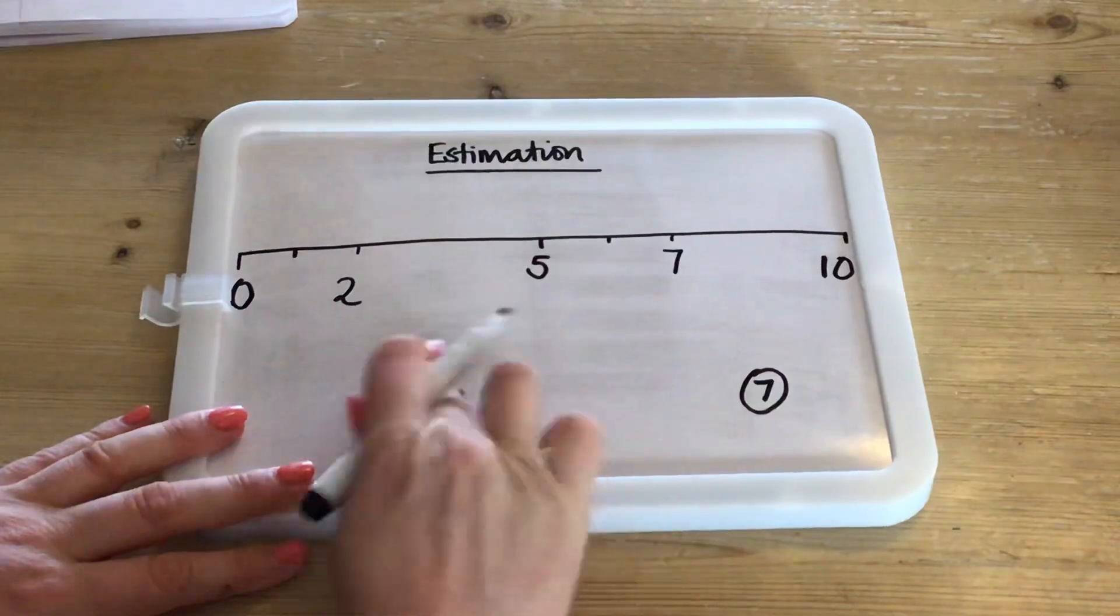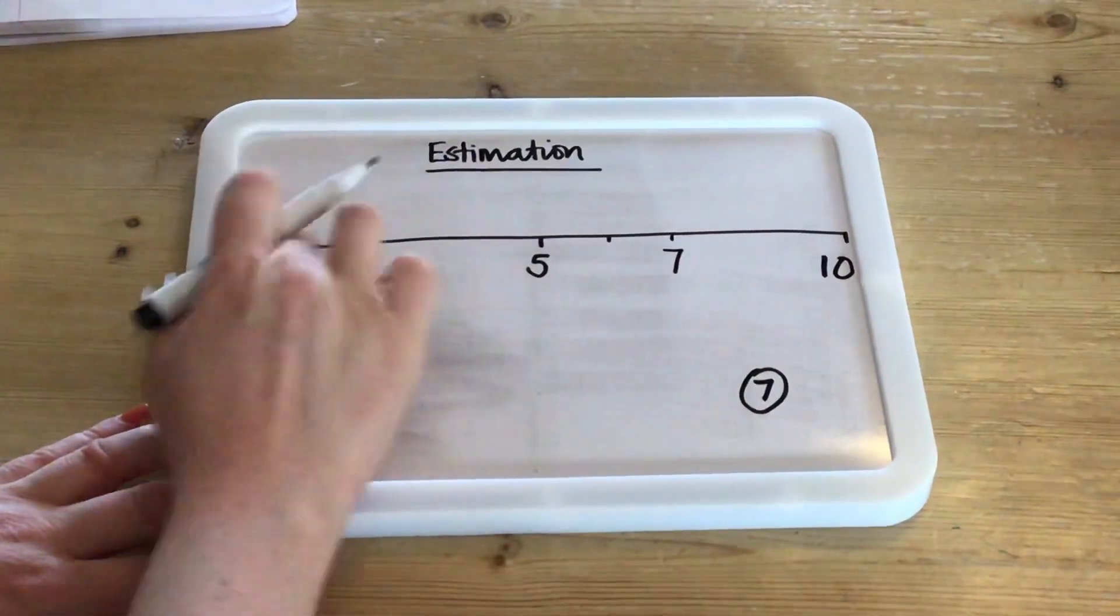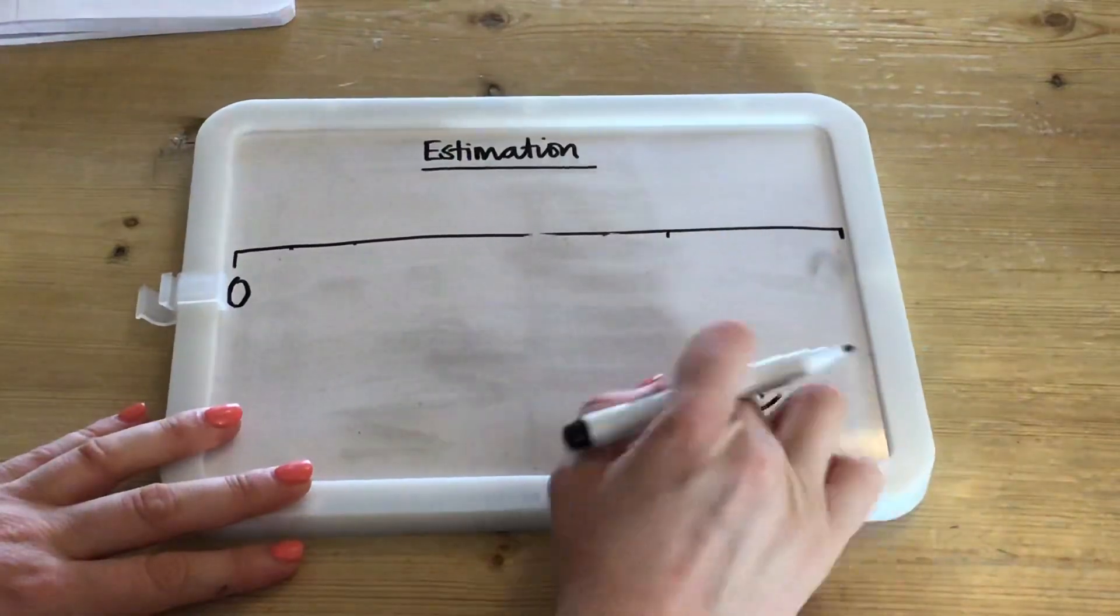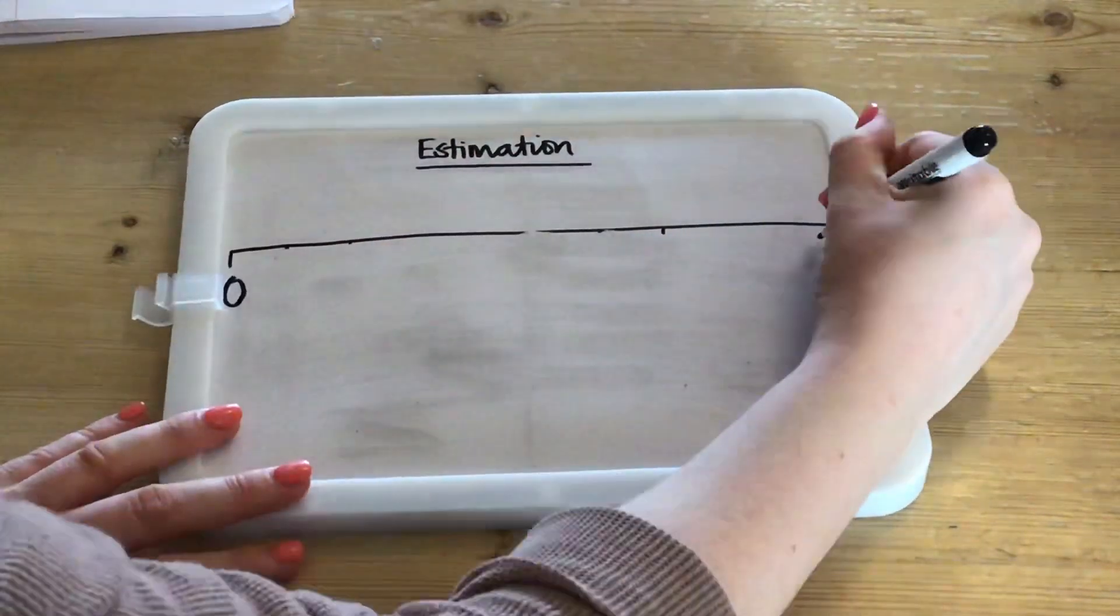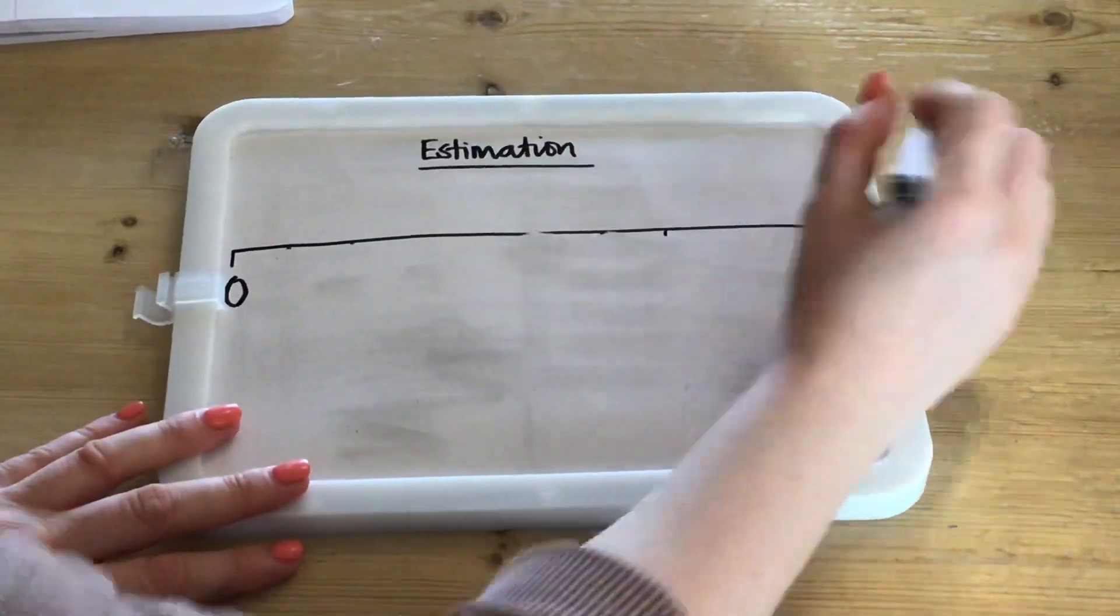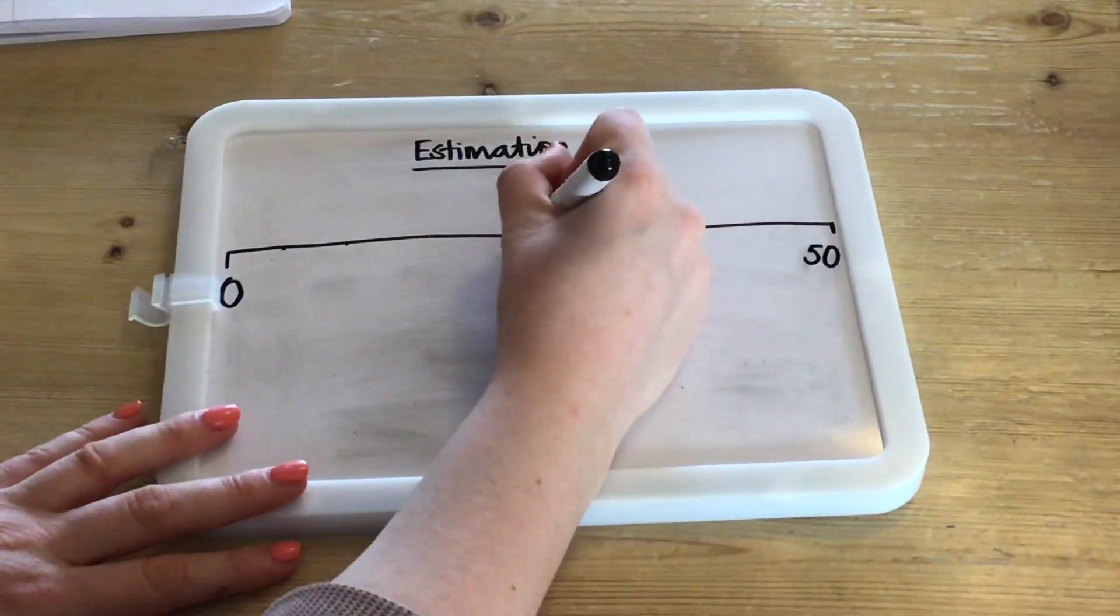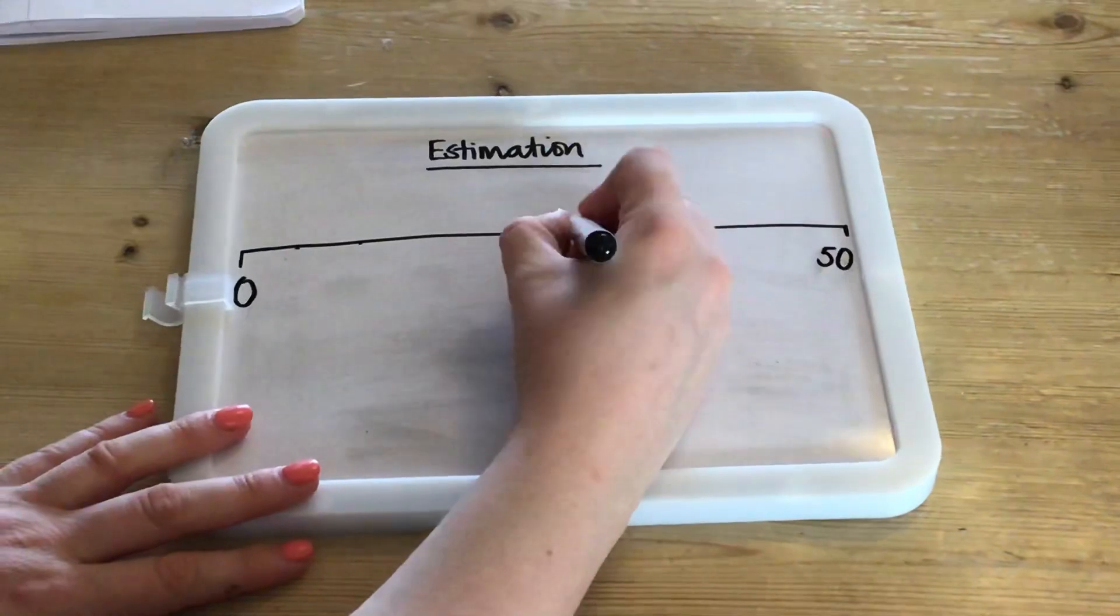Now I'm going to look at estimation using a different range. So if we're looking at a range of 0 to 50, we know that right in the middle of 0 and 50 we have 25.